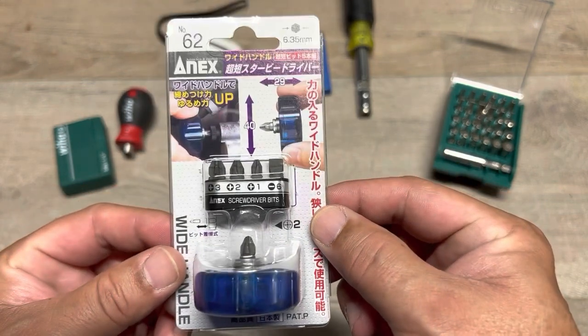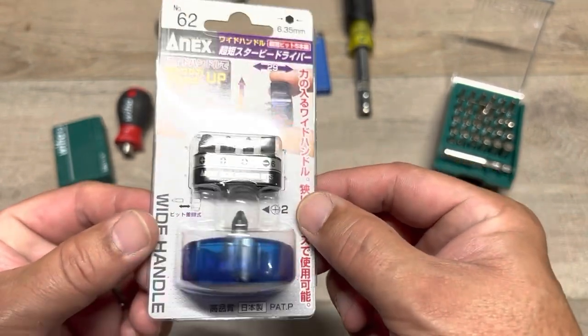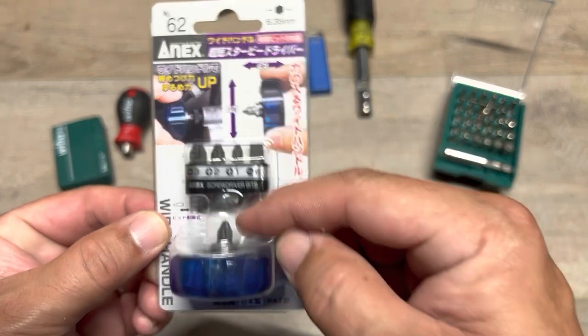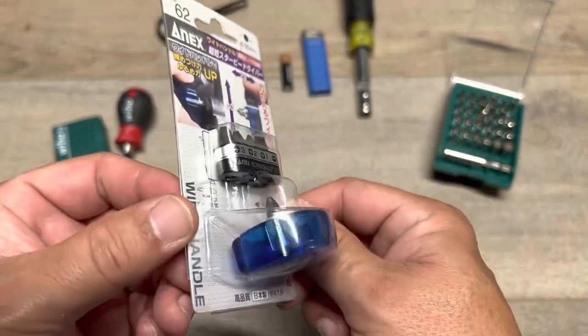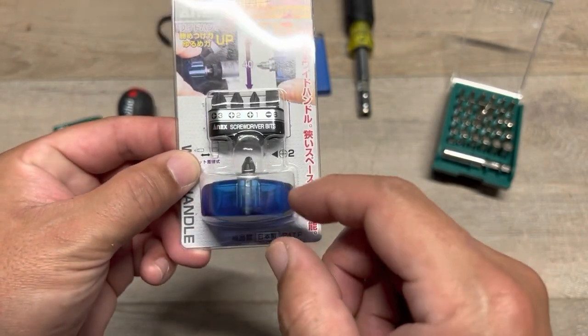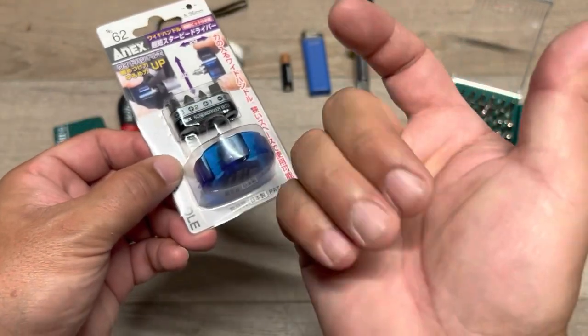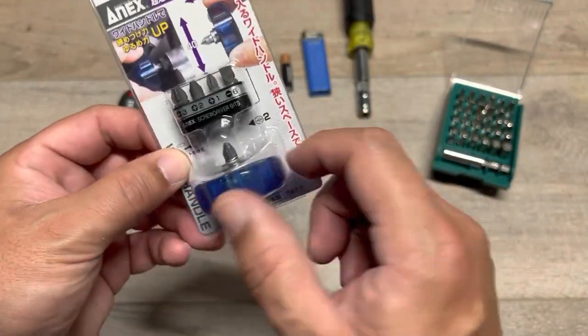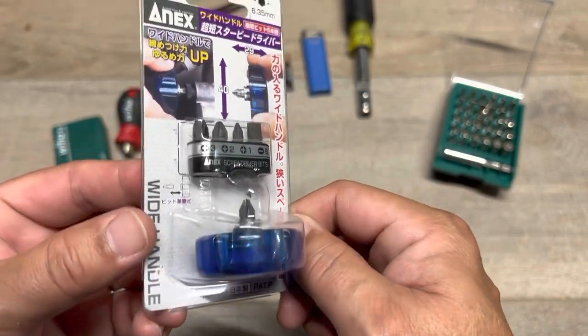So what is this? It might be the smallest, lightest weight stubby screwdriver set combination possibly out there. Some of you are like, hey, that looks more like one of those finger, thumb, palm ratcheting screwdriver head systems. Well, similar, okay?